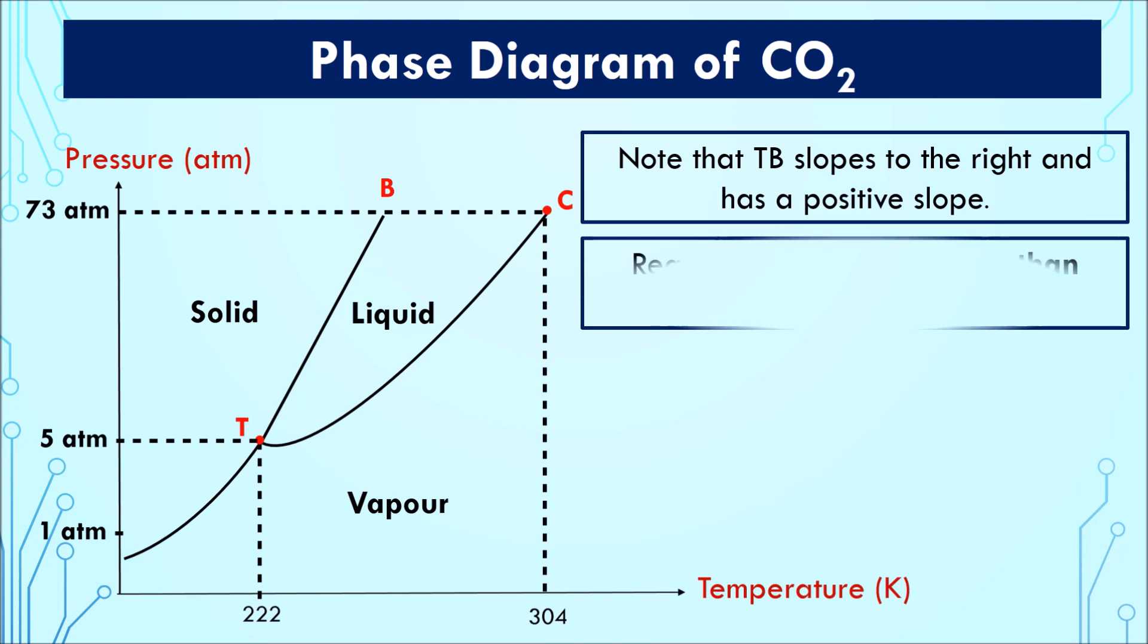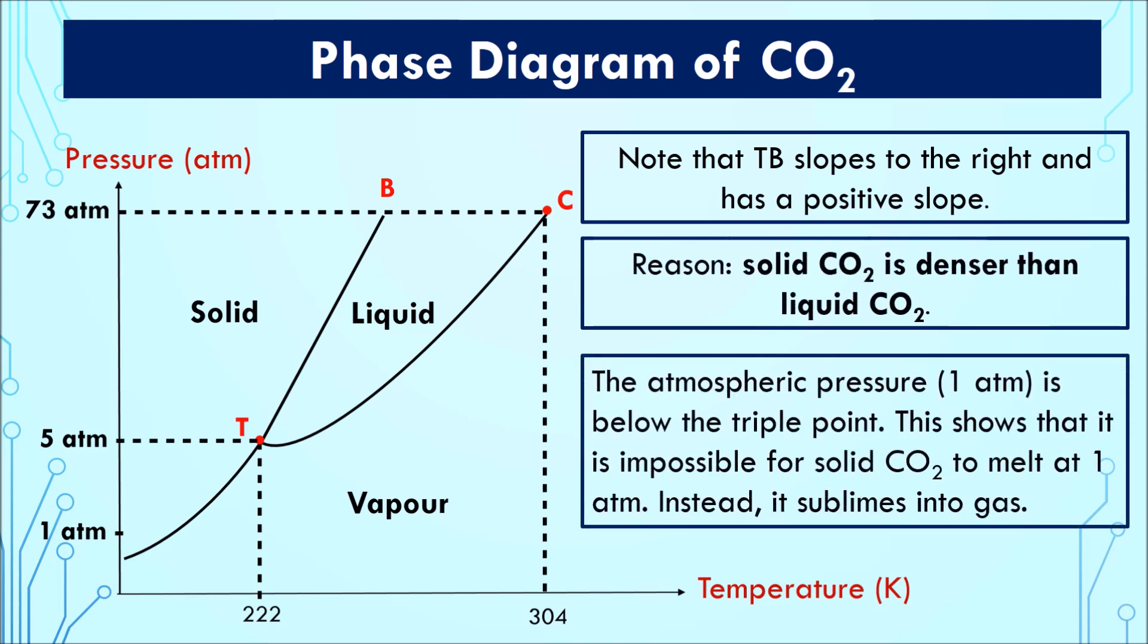Note that TB slopes to the right and has a positive gradient. The reason for this is that solid carbon dioxide is denser than liquid carbon dioxide. The atmospheric pressure of 1 atm is below the triple point. This shows that it is impossible for solid carbon dioxide to melt at one atmosphere. Instead, it undergoes sublimation into gas.